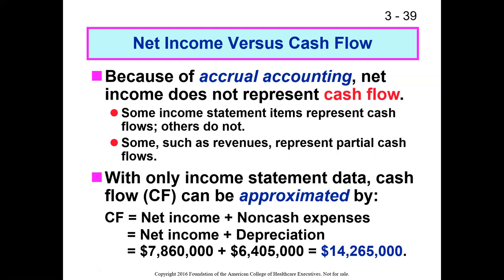Because of accrual accounting, net income doesn't necessarily represent an actual increase in cash on hand, since some cash might not come in until 45 days later or further down the line. Some income statement items represent cash coming and going, and some don't. We had a lengthy discussion about depreciation being a placeholder to represent economic resources being used, but with no cash associated — the cash was paid a long time ago, perhaps for a 30-year-old building you're still depreciating.